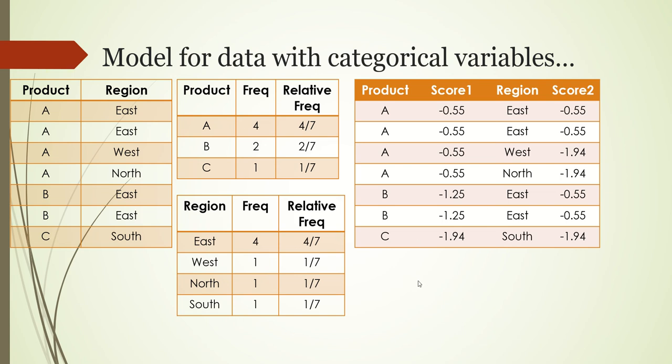Now what we have essentially done is taken the two categorical columns and used relative frequencies and log to create scores. There are two scores - one for product and one for region.